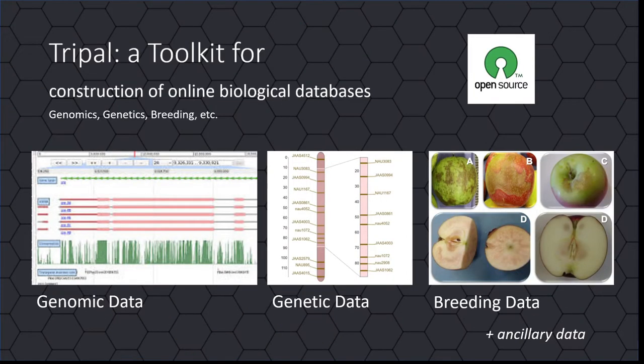To start, TRIPLE is an open-source, freely available toolkit for construction of online genomic, genetic and breeding databases. Websites created using TRIPLE are fully customizable, provide common data loaders and support existing data standards.